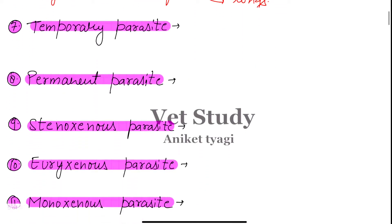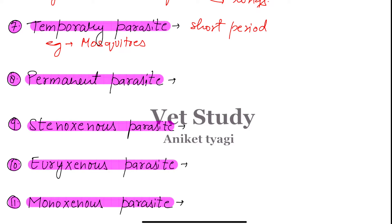Next we have the temporary parasite. Temporary parasites are those parasites which basically live on their host for a very short period. Examples include mosquitoes, which visit their host for a very short period to suck blood, sand flies, and horse flies. All of these are temporary parasites.